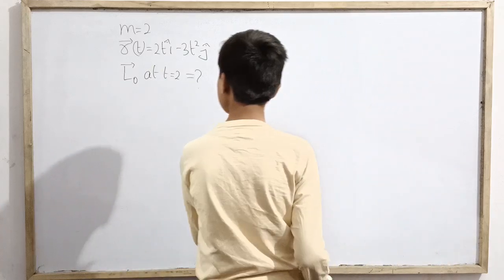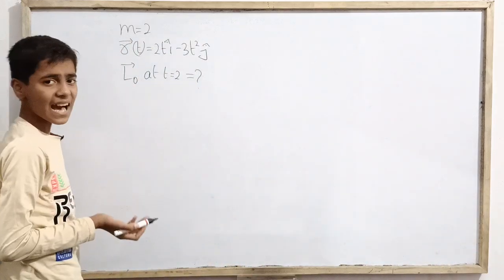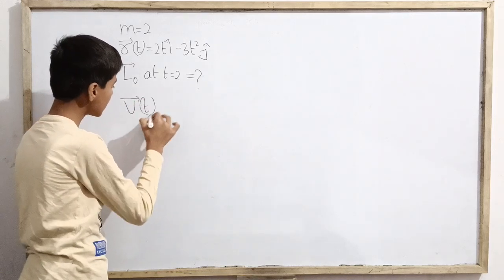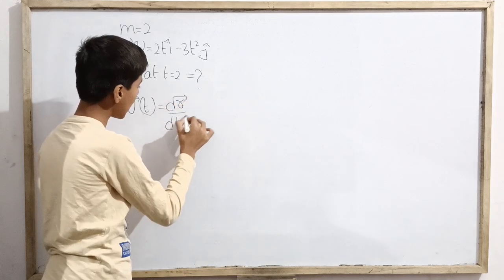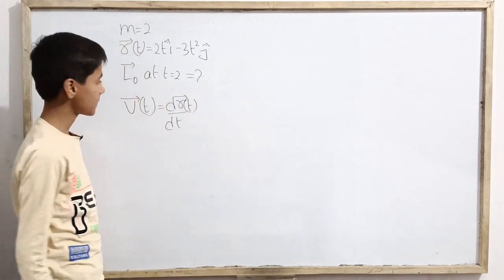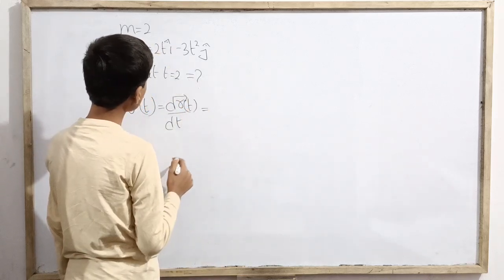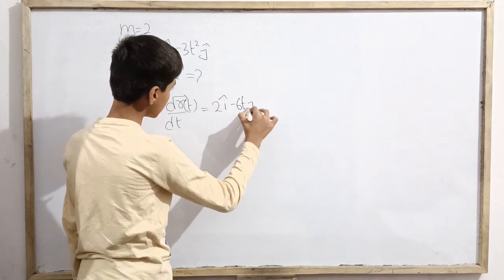To solve this question, m is given and vector r as a function of time is given. We can easily find vector v as a function of time. That is d of vector r over dt. If I take the derivative, this will be 2 i cap minus 6t j cap.